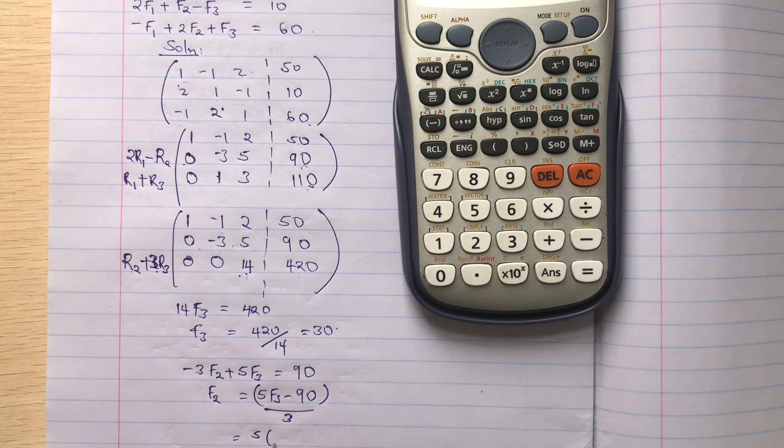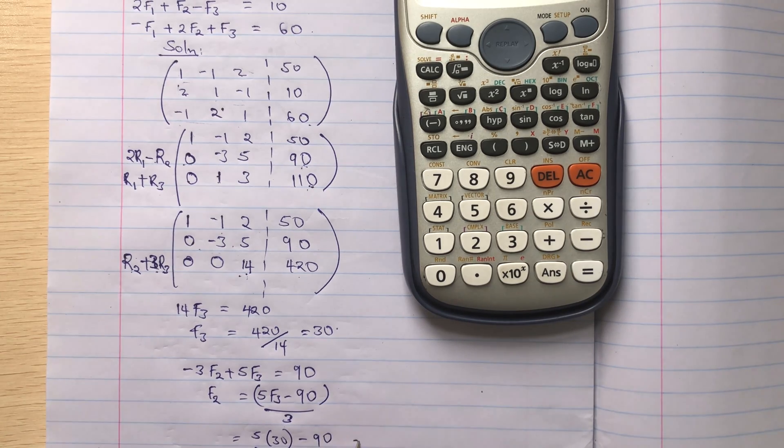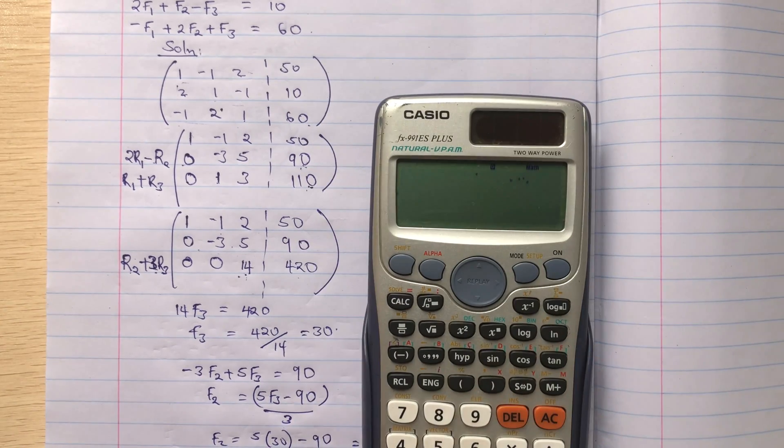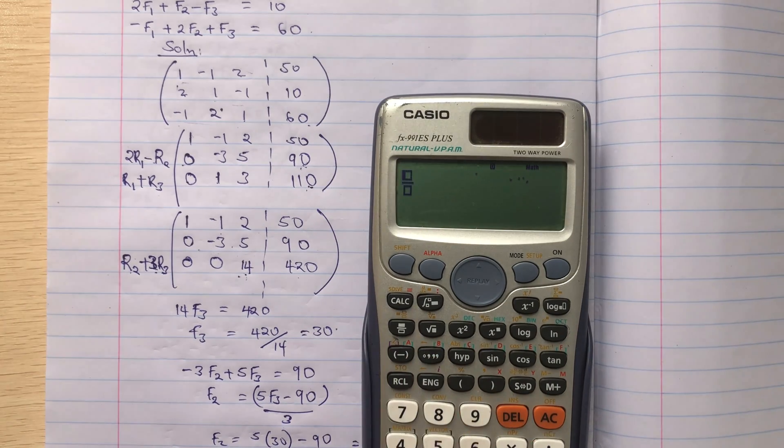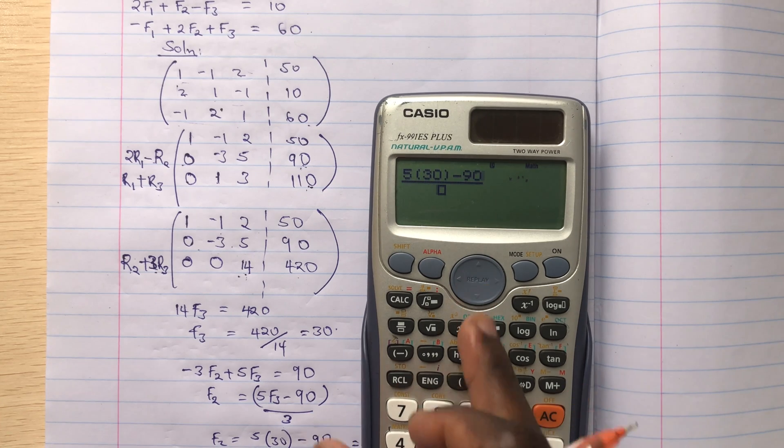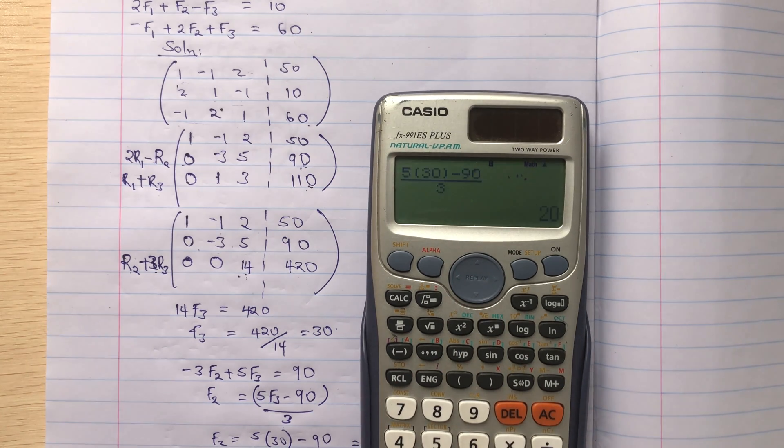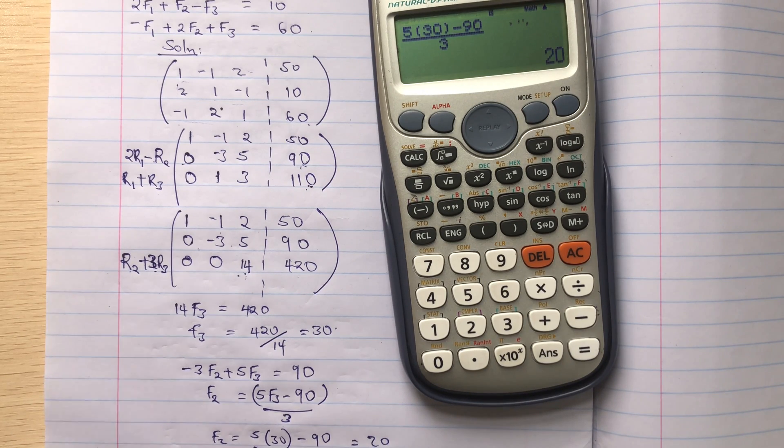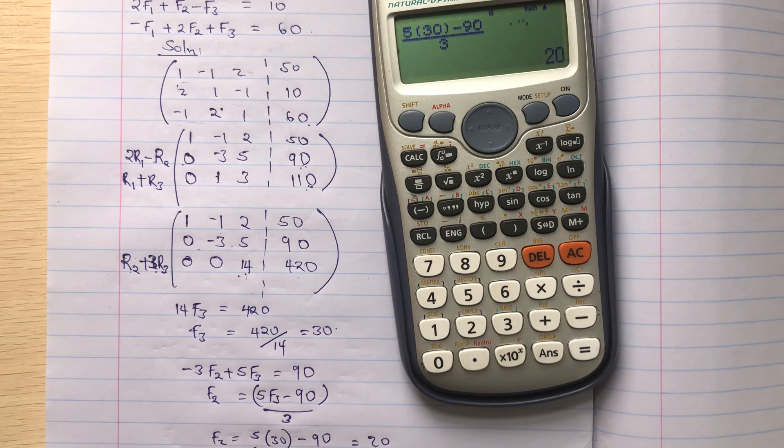So F2 is equal to 5 into 30 minus 90 divided by 3. This gives me 5 into 30 minus 90 divided by 3. So it's 150 minus 90 over 3, that's 60 over 3. So F2 equals to 20.